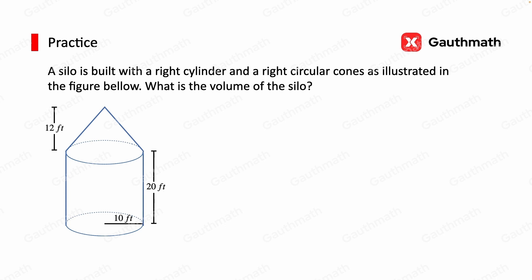As we can see in the figure, we need to sum up the volumes of the two shapes that make up the silo. Firstly, we can find the volume of the cone using the formula one-third times pi R squared times H. And that's one-third times pi times 10 squared, that's the radius, times 12, that's the height, which equals 400 pi cubic feet.